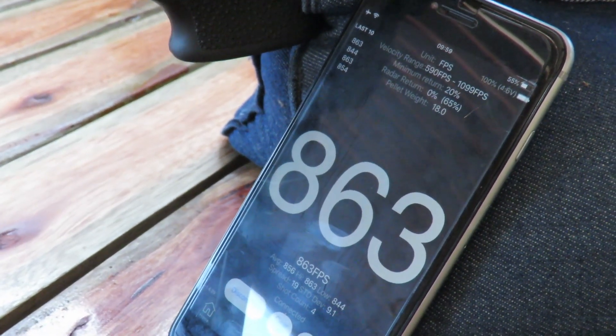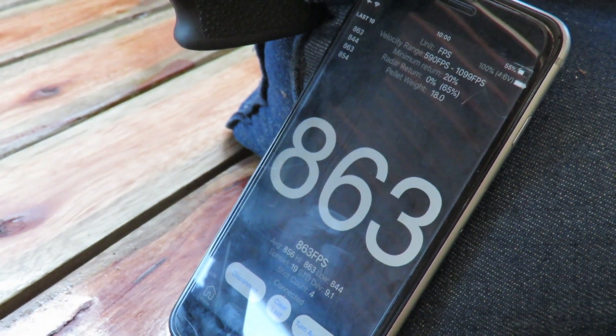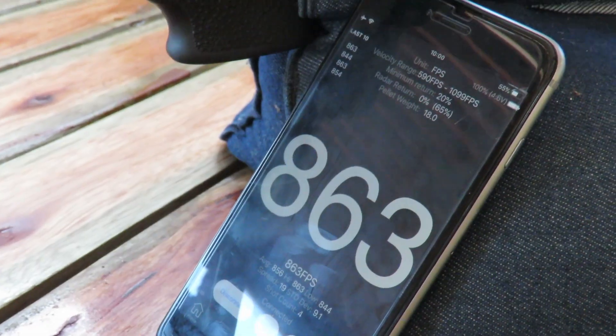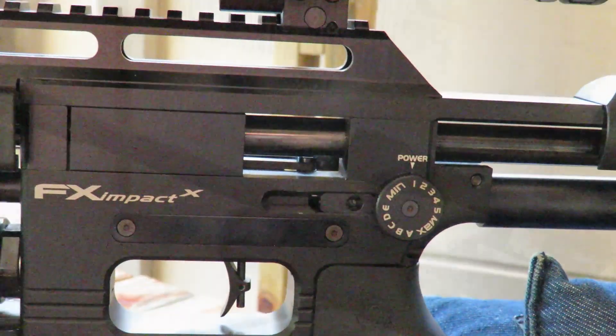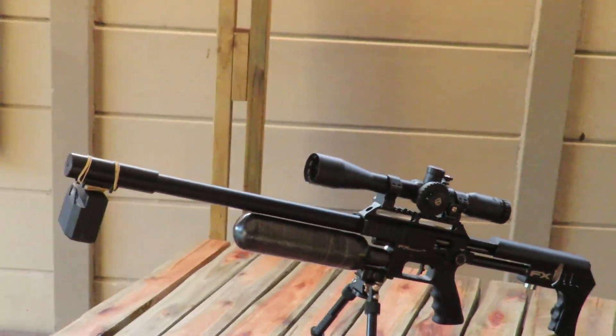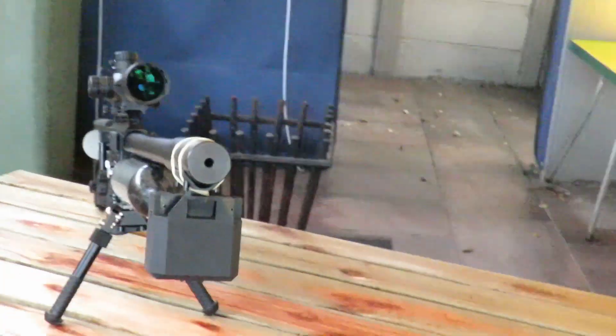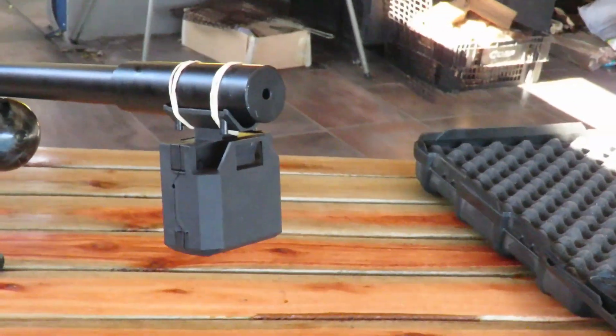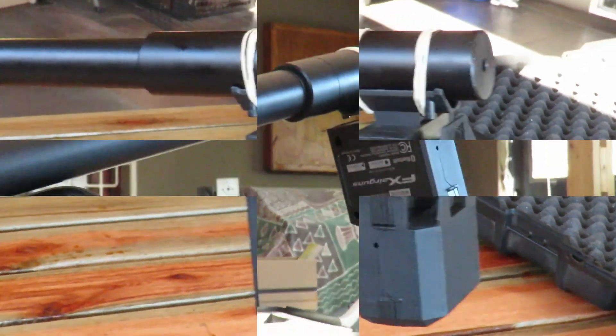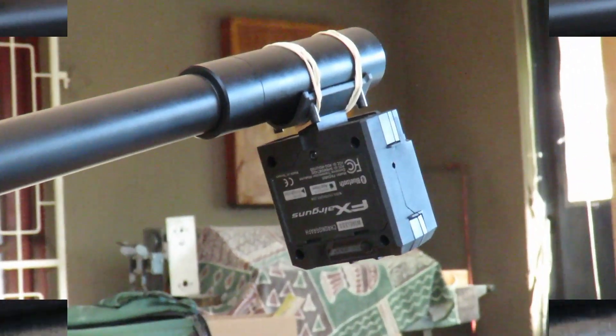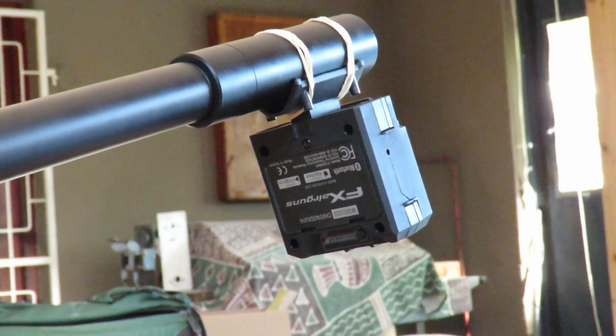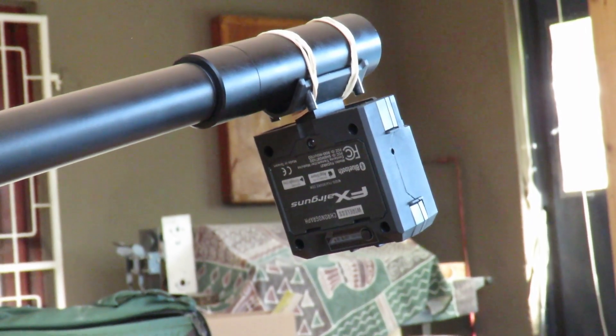Then we'll look at the grouping and how much the power affects the speed and the accuracy of the gun. Today I'm using my FX Mark One with a 700mm slug barrel, 10x scope on top. The FX radar is connected to the front onto the silencer. The air pressure is filled to 230 bar and the reg pressure is at 145 bar.